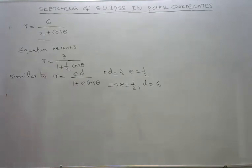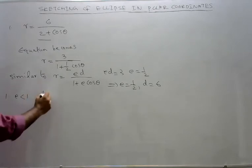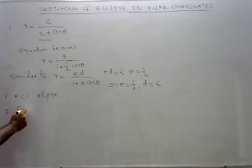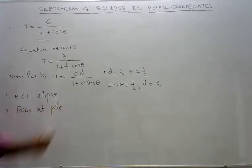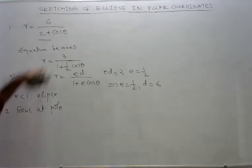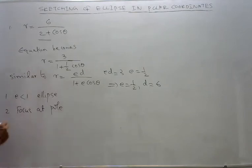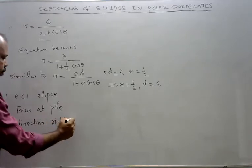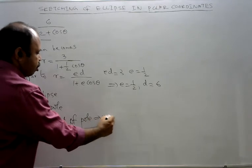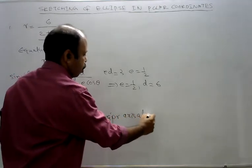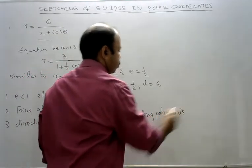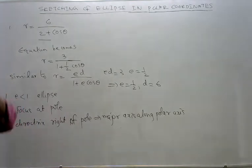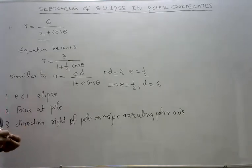Now we have identified the conic. E is less than 1, so the conic is an ellipse. Then focus at origin. Now, what about the position of directrix? This is R equals ED divided by 1 plus E cos theta, directrix right of focus. So that means major axis along polar axis. Since the directrix is right of focus, we find R0 and R1 by substituting theta equal to 0 and theta equal to π.